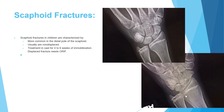Next we come to the scaphoid fracture. Scaphoid fractures in kids have certain characteristics: they are more common in the distal pole, as seen here in this distal pole fracture, and they are usually non-displaced. Treatment is cast for four to six weeks. This x-ray of a skeletally immature patient shows a scaphoid fracture — it's usually distal pole, undisplaced, and can be treated in a cast. Most cases do not require surgery especially if non-displaced.